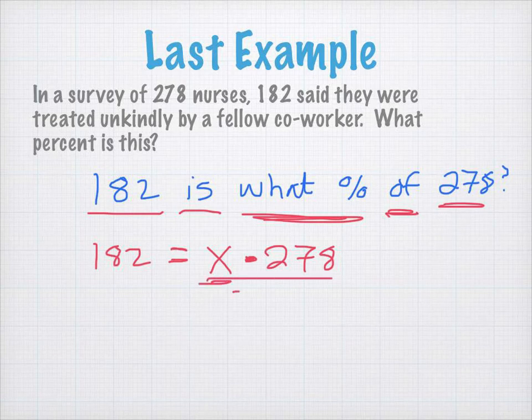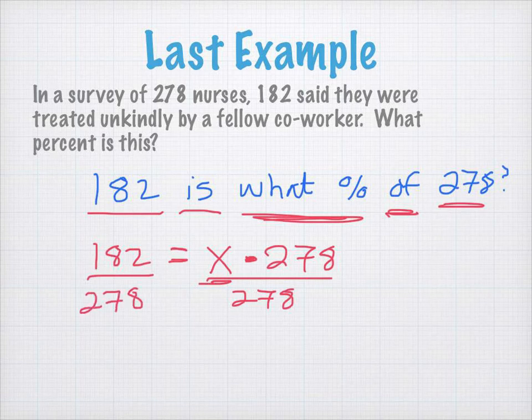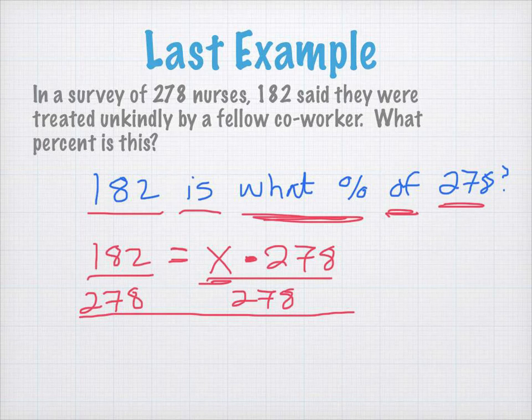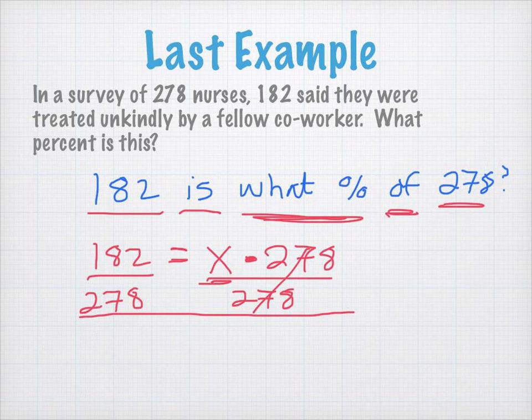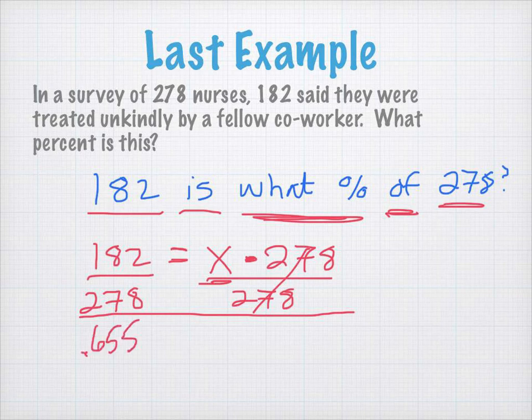So, I'm going to divide both sides by 278. If you need a review of solving one-variable equations, I would recommend looking that up, solving one-variable equations, or you're welcome to email me. By dividing both sides by 278, let's see, I get 182 divided by 278. So, I'm going to round this to three decimal points here. So, I'm going to get 0.655. 0.655 equal to X.